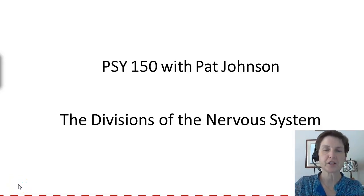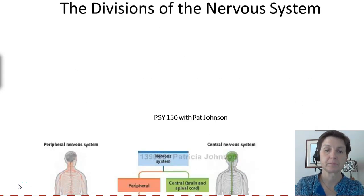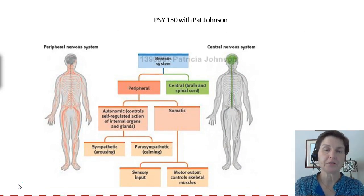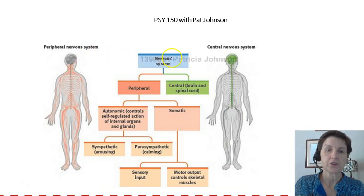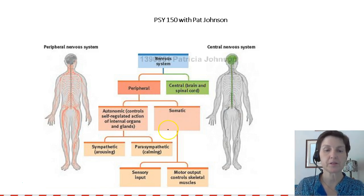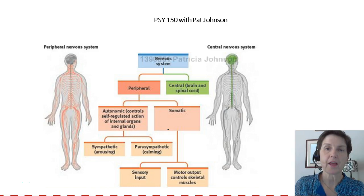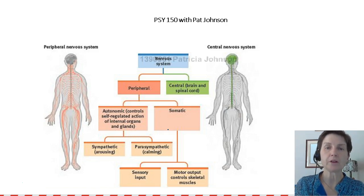Hi, this is Pat Johnson, your psychology instructor. In this mini-lecture, we're going to study the divisions of the nervous system. Here's a picture of the divisions of the nervous system. You can see that the nervous system breaks into different branches, and those parts have different parts. We'll take a close look, and by the end of this mini-lecture, you'll be able to draw this chart on your own, knowing all the different divisions and what each division does.